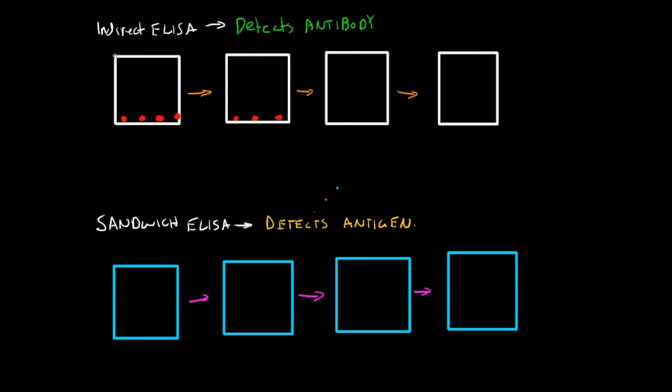So the first type I'm going to talk about is an indirect ELISA, which is when you're looking to detect a specific antibody. The second type is called a sandwich ELISA, which detects a specific antigen.